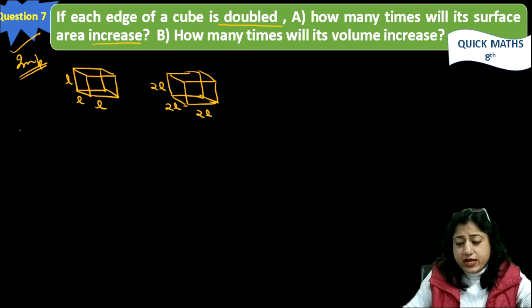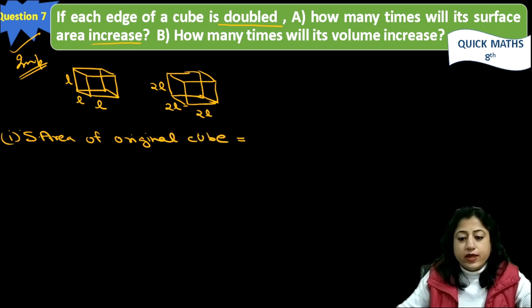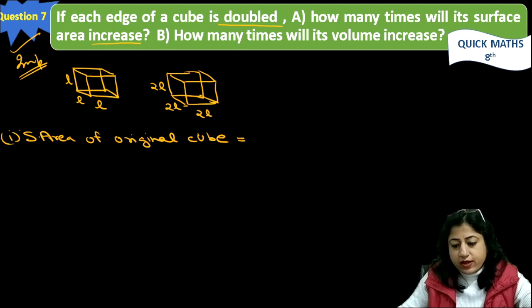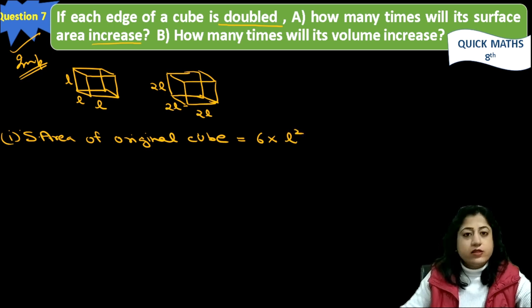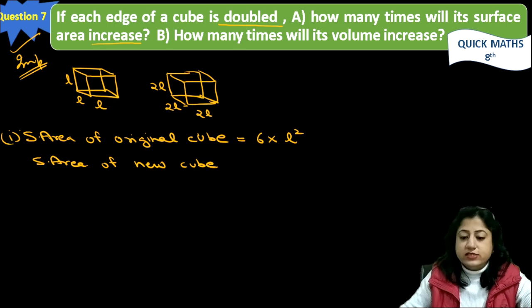First of all, if he is asking surface area, so surface area, first part. Surface area of original cube - I am saying it original, first cube, it is original cube. Surface area is 6 into L squared. Surface area of new cube, when the edge is doubled.